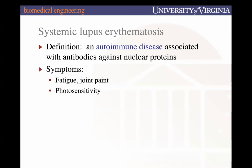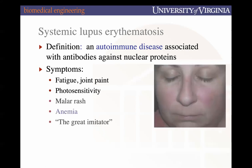Nuclear proteins are in just about every cell, so the symptoms associated with lupus are going to present pretty broadly. Typically there's fatigue, joint pain, and photosensitivity. In addition to that, there's a malar rash — a butterfly-like rash that occurs across the cheeks and face.